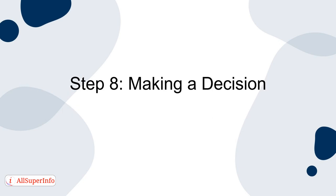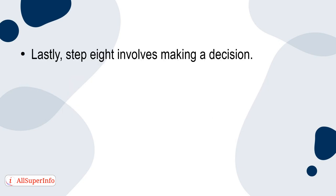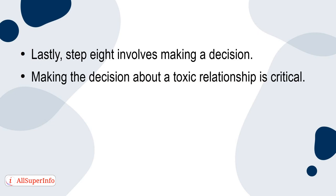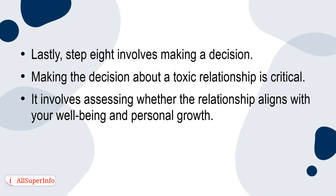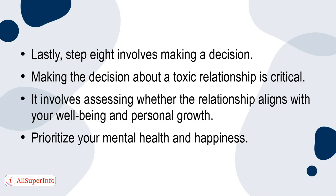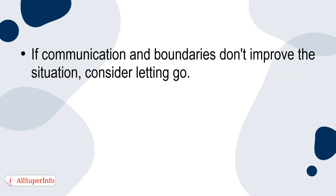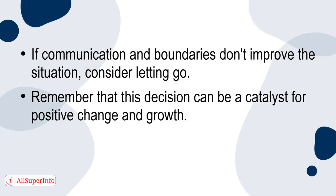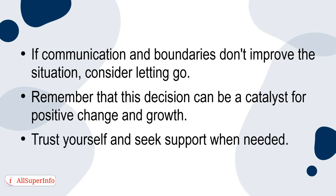Step 8: Making a decision. Making the decision about a toxic relationship is critical. It involves assessing whether the relationship aligns with your well-being and personal growth. Prioritize your mental health and happiness. If communication and boundaries don't improve the situation, consider letting go. Remember that this decision can be a catalyst for positive change and growth. Trust yourself and seek support when needed.